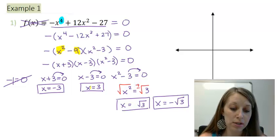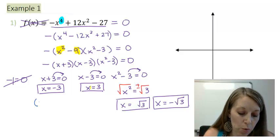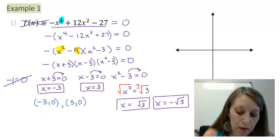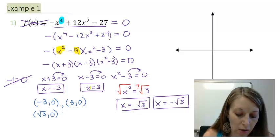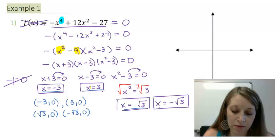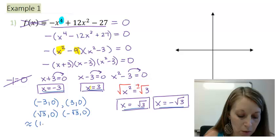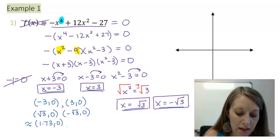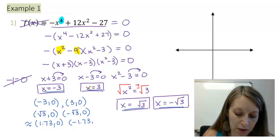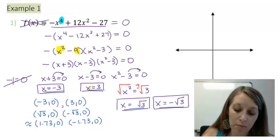Let's put them in intercept or ordered pair format. The first is (−3, 0), the second is (3, 0), then (√3, 0) and (−√3, 0). To plot the ±√3 points, we need a decimal approximation: √3 is approximately 1.73. So I'll graph those at (1.73, 0) and (−1.73, 0), along with (−3, 0) and (3, 0) on the x-axis.